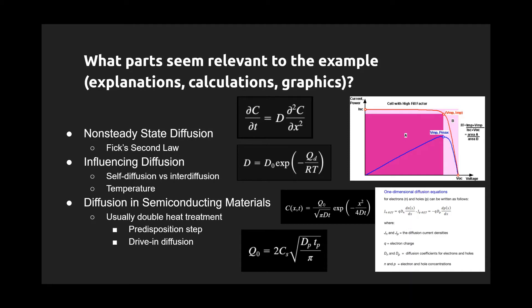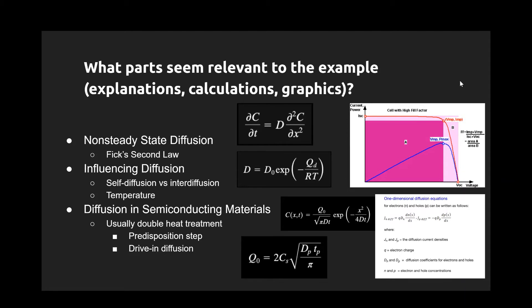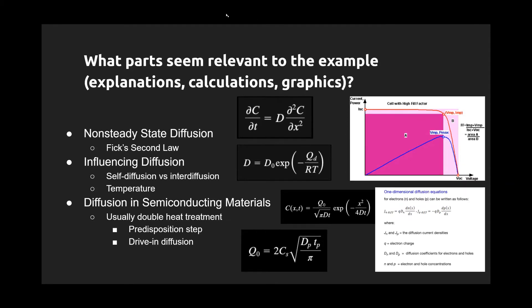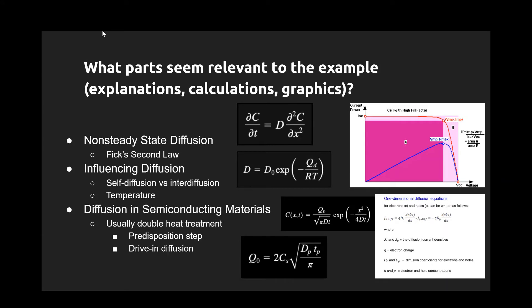The equation to the right of the influencing diffusion bullet point portrays how to achieve the diffusion coefficient. For diffusion in semiconducting materials, which is incredibly impactful for this example, it results from a double heat treatment which is separated into two parts. The first part is predisposition. During this process, impurity atoms are put into silicon at a temperature of around 900 to 1000 degrees Celsius. The second, driving diffusion, is when the impure atoms are driven further into the silicon. This results in better concentration of the impure atoms while not adding in more impurities. This process is orchestrated at a higher temperature of around 1200 degrees Celsius.